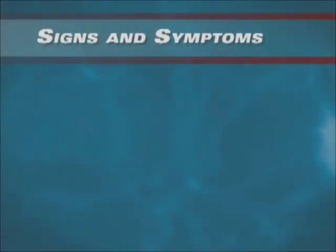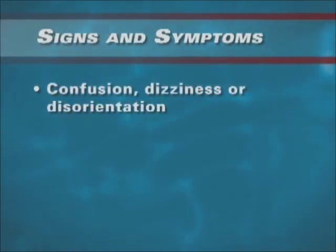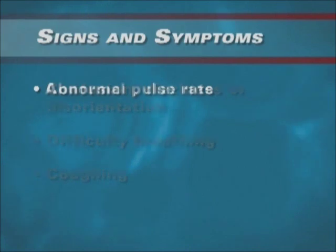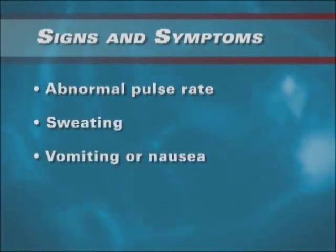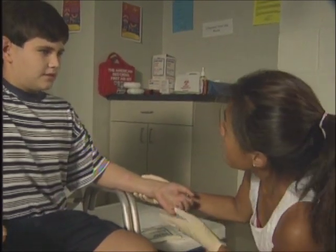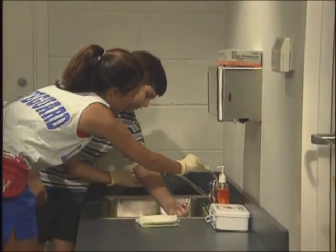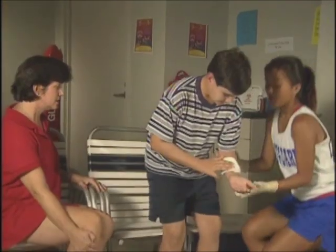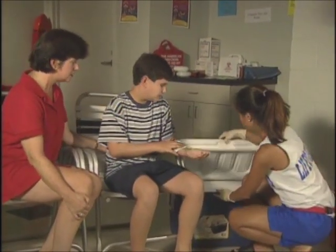A person who has been poisoned or has an allergic reaction may show these signs and symptoms: confusion, dizziness or disorientation, difficulty breathing, coughing, abnormal pulse rate, sweating, vomiting, or nausea. If the person tells you they are allergic, or if they begin to show signs and symptoms of poisoning or an allergic reaction, summon EMS personnel.